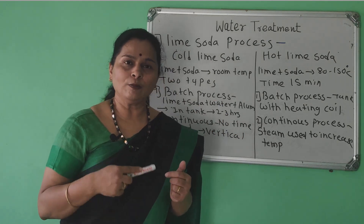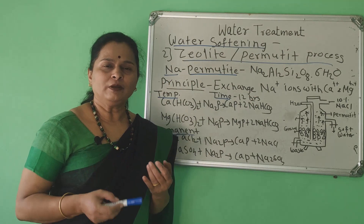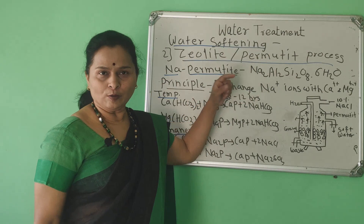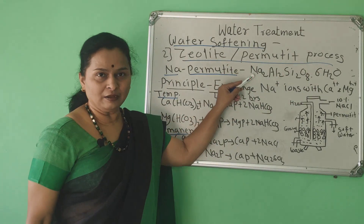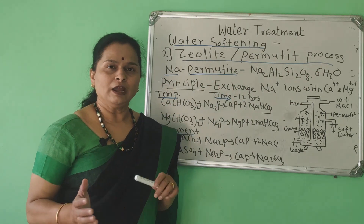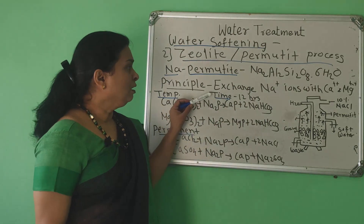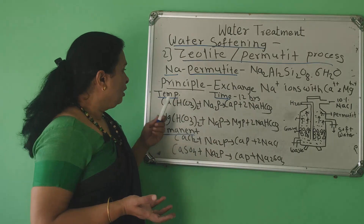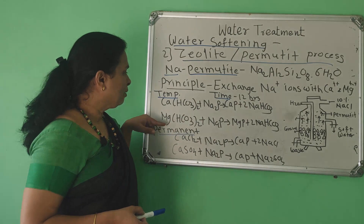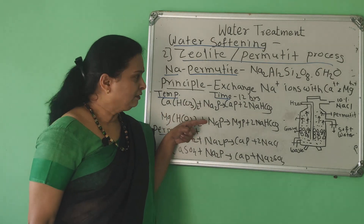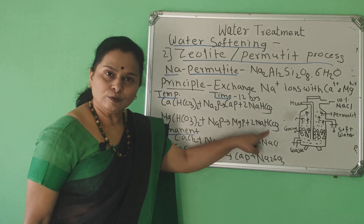The second process is the zeolite or permutite process. Sodium permutite is used for softening water — both temporary and permanent hardness are removed. The chemical composition of sodium permutite is Na₂Al₂Si₂O₈·6H₂O. The principle is the exchange of Na⁺ ions with Ca²⁺ and Mg²⁺ ions. The time required for this process is 12 hours. For temporary hardness due to calcium bicarbonate and magnesium bicarbonate, when sodium permutite is added, calcium permutite and magnesium permutite are formed along with sodium bicarbonate.